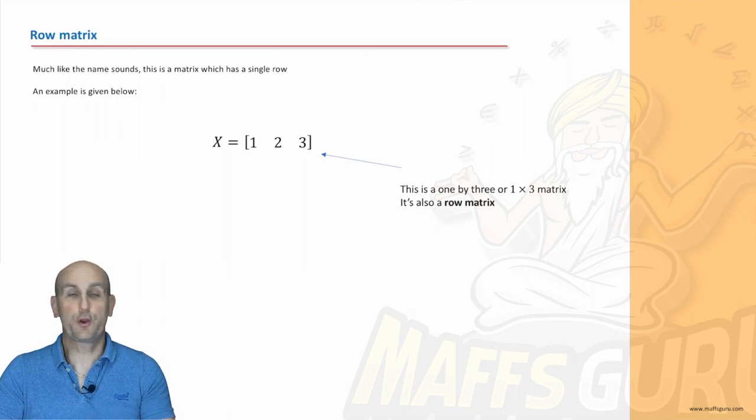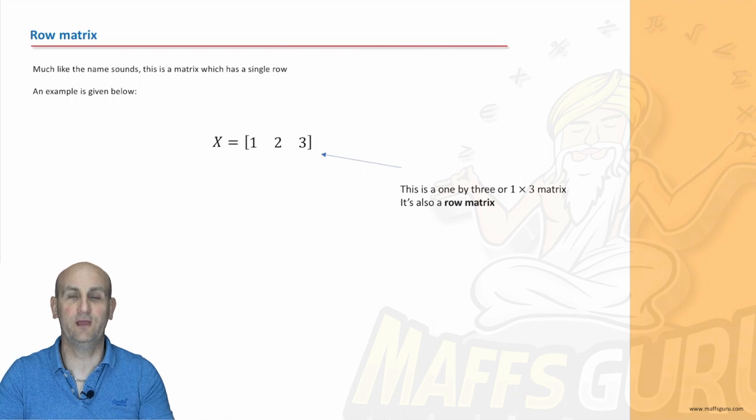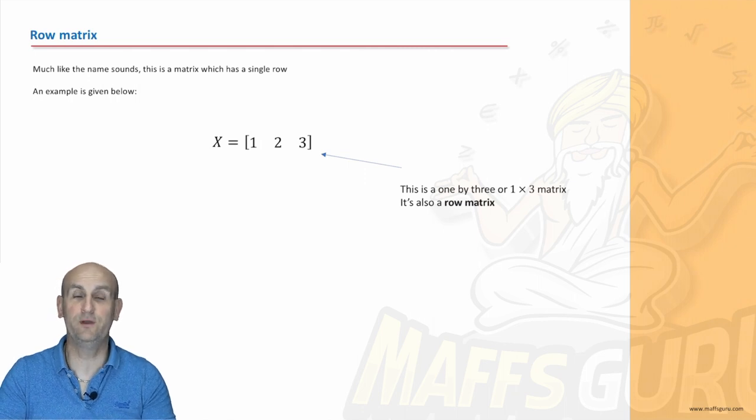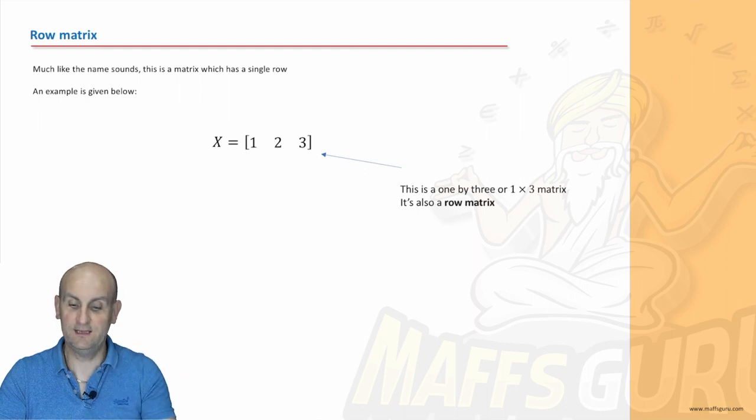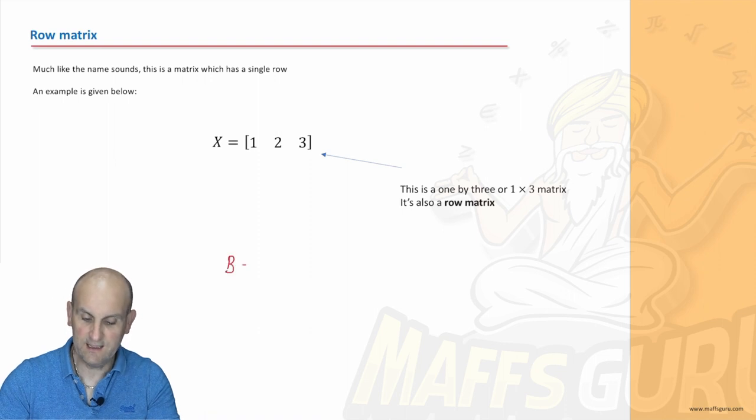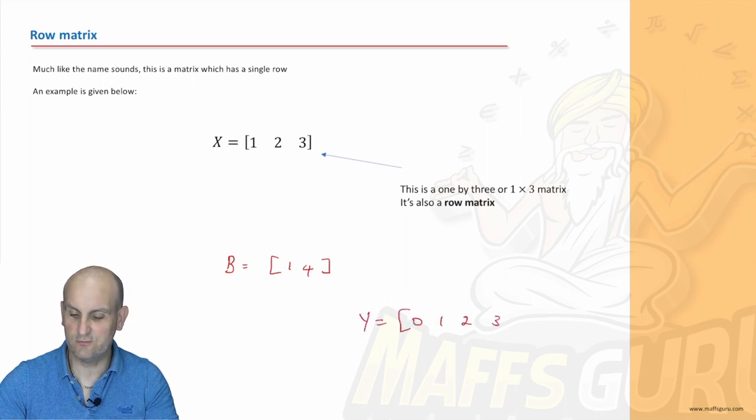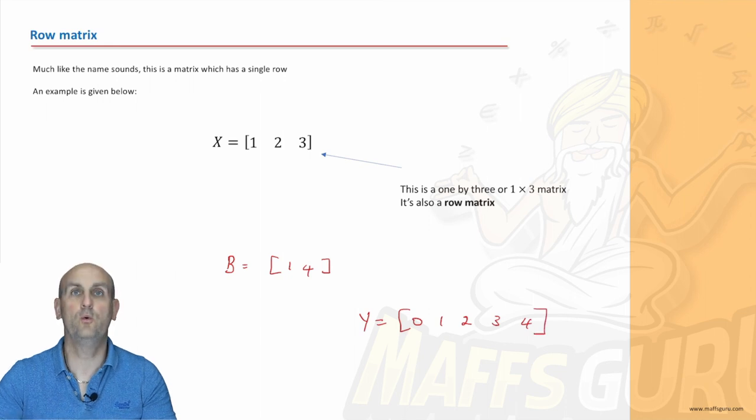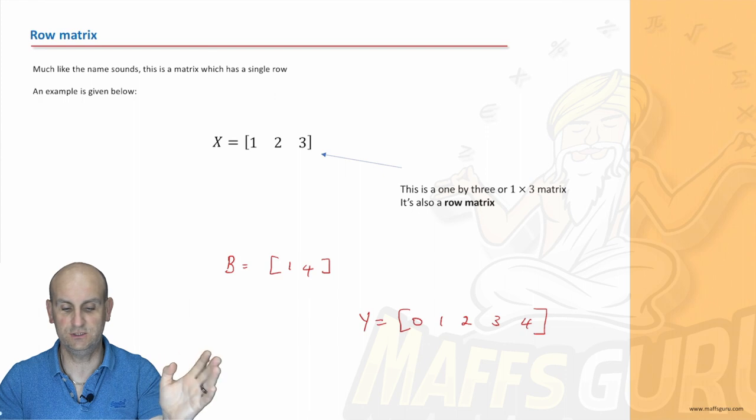More language. A row matrix. Now, this is where I like general math because it sort of makes sense. A row matrix is a matrix what is 1 row. 1 row. There we go. That is a row matrix. It's a 1 by 3. You know, it doesn't have to have that. I could have B is equal to [1, 4]. That's also a row matrix. Or Y is equal to [0, 1, 2, 3, 4]. They are all row matrices. They have one row of numbers. End of. Ka-ching.